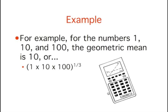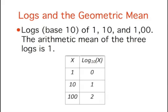As you probably know, raising a value to the 1 over nth power is the same as taking the nth root of the value. For example, for the numbers 1, 10, and 100, the product of all the numbers is 1 times 10 times 100, which equals 1000. Since there are three numbers, we take the cubed root of 1000, which turns out to be 10.